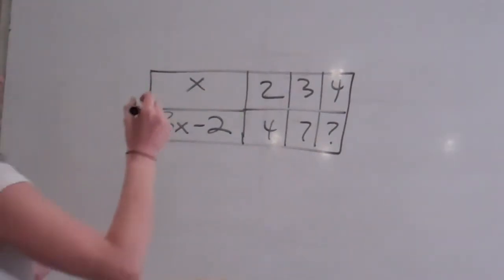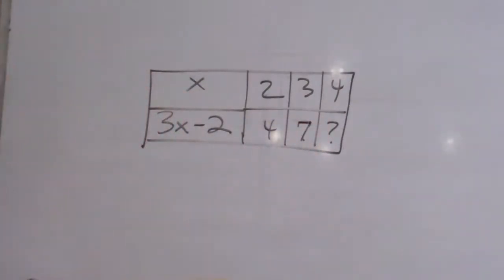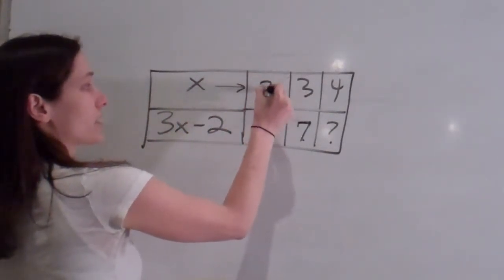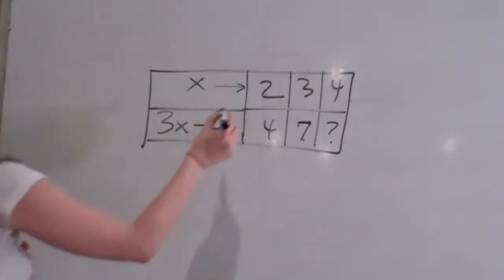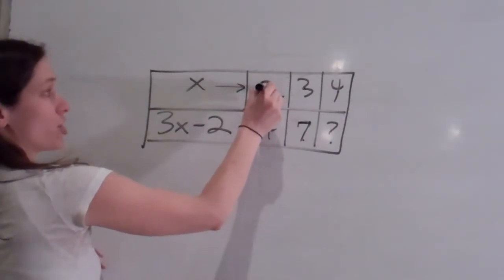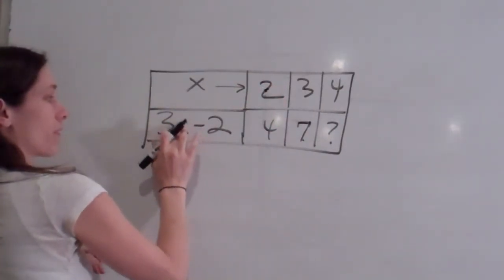Is that a seven or a question mark before that? A seven. And then a question mark. Good, thank you for pointing that out. So basically what you're going to do is these are the x's. X is two, x is three, or x is four, whichever one we choose. So if I choose x being two, then I'm going to put it right here.